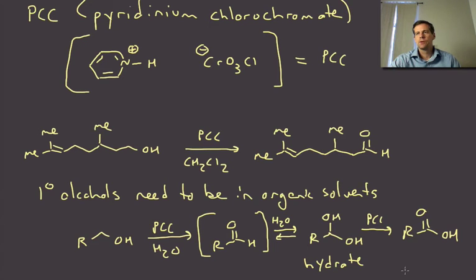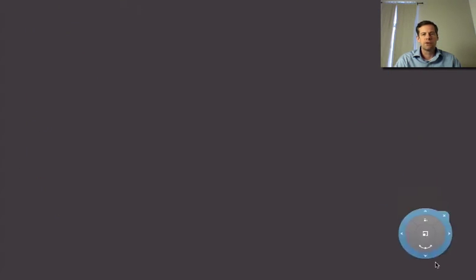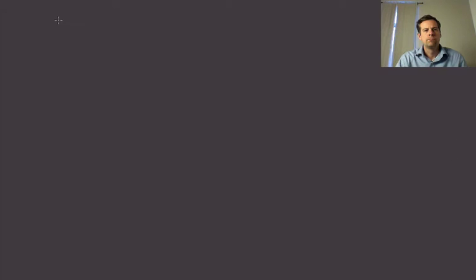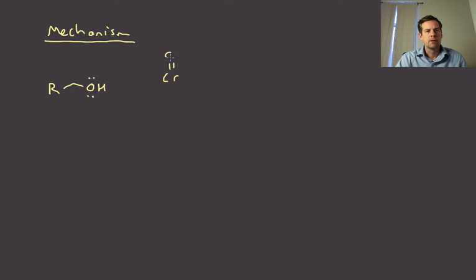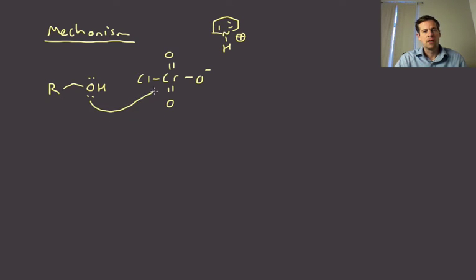Secondary alcohols don't suffer from that problem because there's no potential for over-oxidation. Now for the mechanism: we draw the alcohol with its lone pair, and the chromium species has two double-bonded oxygens, a chloride substituent, and the oxo anion. The pyridinium is just the counter ion. The hydroxyl group of the alcohol attacks the electron-deficient chromium, displacing chloride.